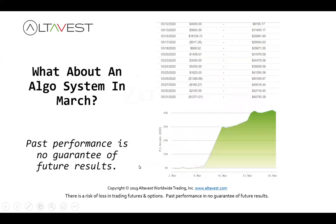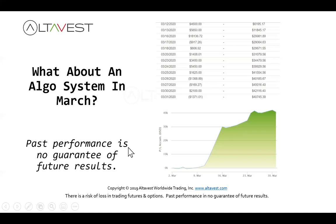Here's an example of one system — and remember, past performance does not guarantee future results. Here's the performance of a particular system in March that we have access to. You can see all the gains and losses day by day and the accumulated profits and losses. By the end of the month, this system did phenomenally well when traditional assets didn't. So maybe there's more we can do — let's take a deeper dive in just a moment.